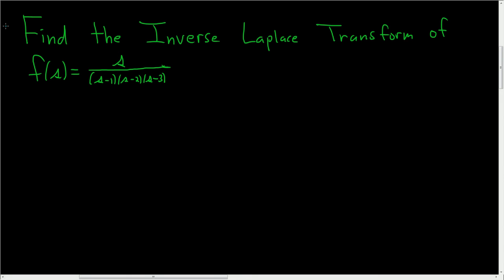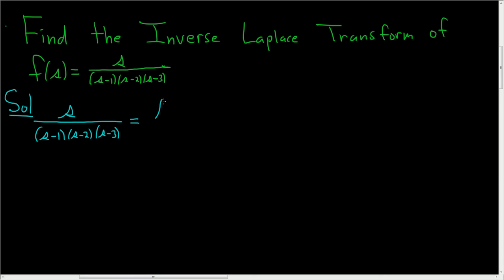Find the inverse Laplace transform of S, all being divided by S minus 1, S minus 2, and S minus 3. In this problem, we will use partial fractions. So we'll have S over S minus 1, S minus 2, and S minus 3. We have distinct linear factors, so this is A over S minus 1 plus B over S minus 2 plus C over S minus 3.